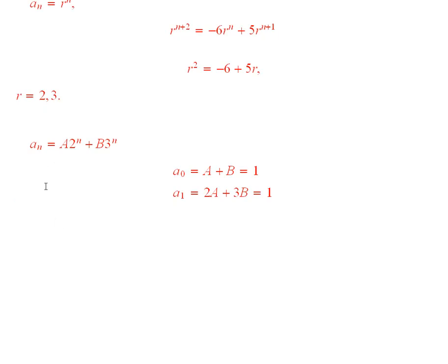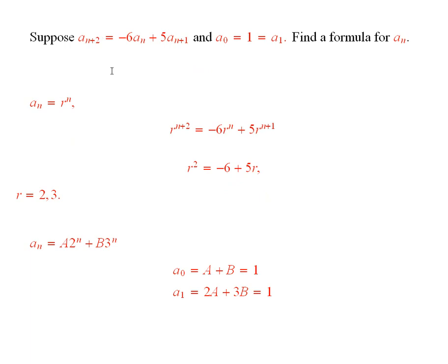So our solution to the recurrence relation, this original recurrence relation, should be something of the form a sub n equals a times 2 to the n plus b times 3 to the n. I don't know what a and b are.